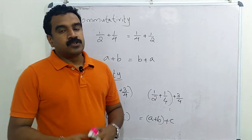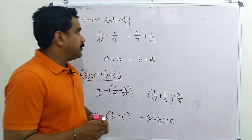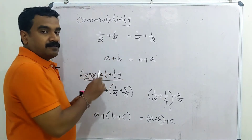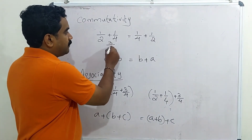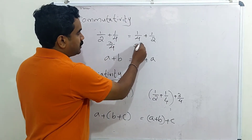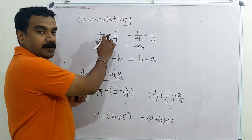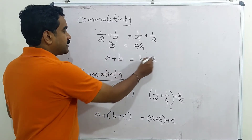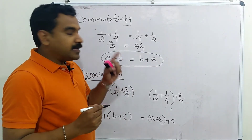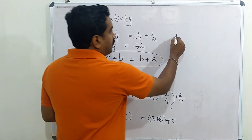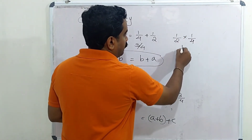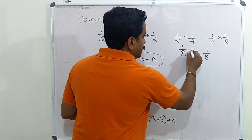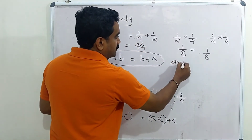Now look at the commutativity property. What is 1 by 2 plus 1 by 4? It is 3 by 4. What is 1 by 4 plus 1 by 2? It is also 3 by 4. So we can say 1 by 2 plus 1 by 4 equals 1 by 4 plus 1 by 2, that is 3 by 4 equals 3 by 4. Generally, A plus B equals B plus A. In multiplication, 1 by 2 into 1 by 4 is 1 by 8, and 1 by 4 into 1 by 2 is also 1 by 8. So A into B equals B into A.